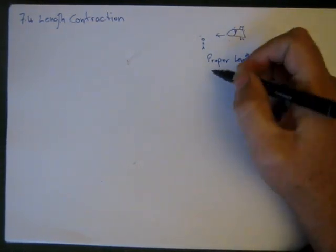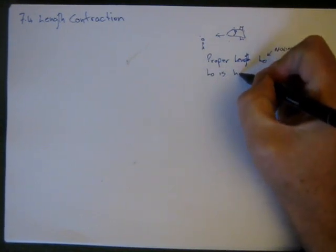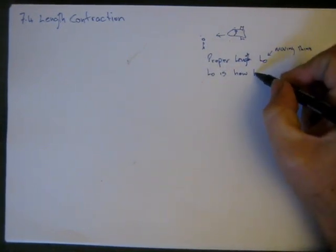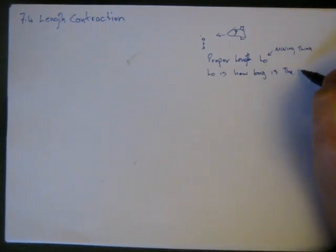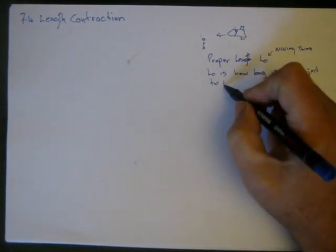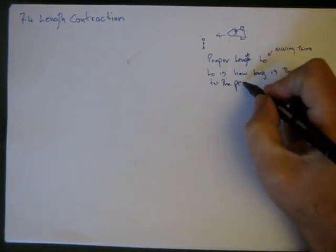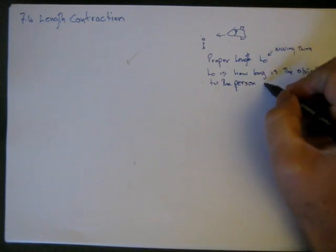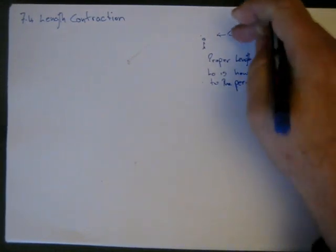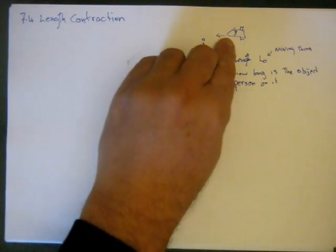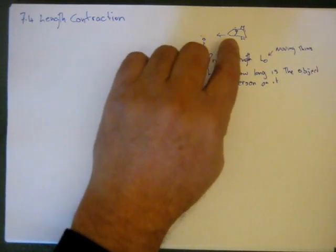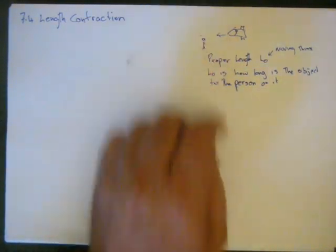How long? L0 is how long is the spaceship as the object to the person on it. If this spaceship were parked, it might be 50 meters long. If it was moving to this person, it would still be 50 meters long. And that would be L0. But this person here will see it's a different thing.